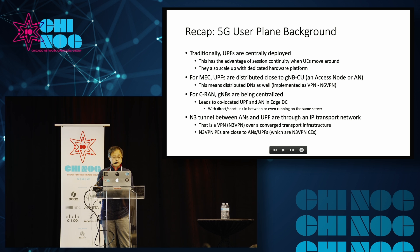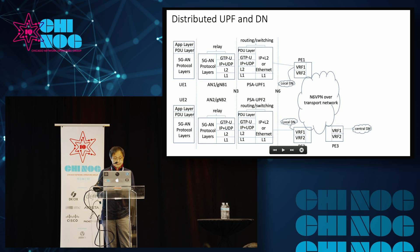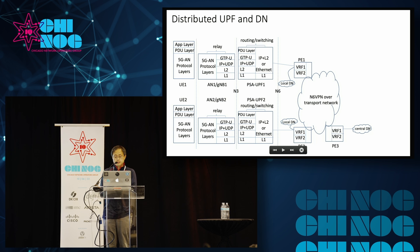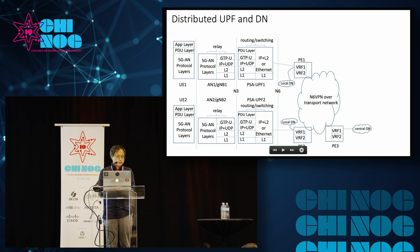This picture shows distributed UPFs. If you look at PSA-UPF1 and PSA-UPF2 in the middle, those are the distributed UPFs. They terminate the session between the UE and UPF and then use the N6 interface to connect to the data network. The data network is implemented as a VPN, shown as VRF1 in this picture. In that VRF1 there could also be a local data network where edge computing resources are hosted.